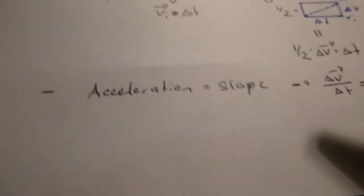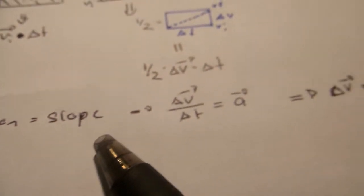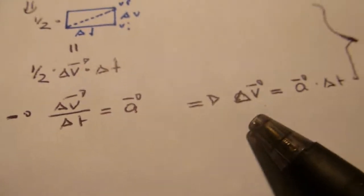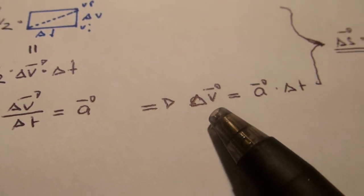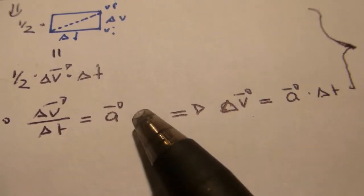We also know that acceleration is the slope. Therefore delta V over delta T is acceleration, or delta V is the acceleration times delta T. We simply multiply both sides with delta T.